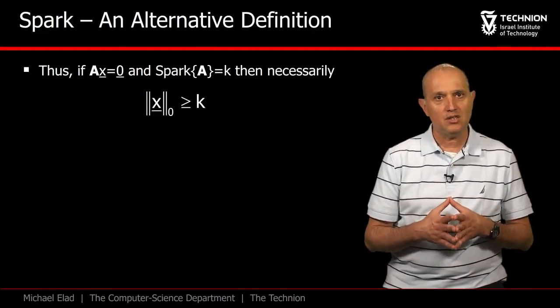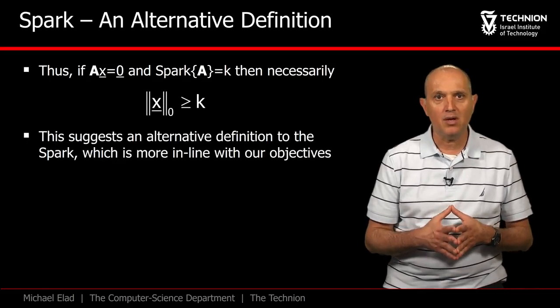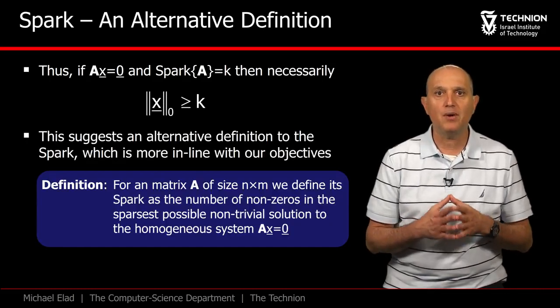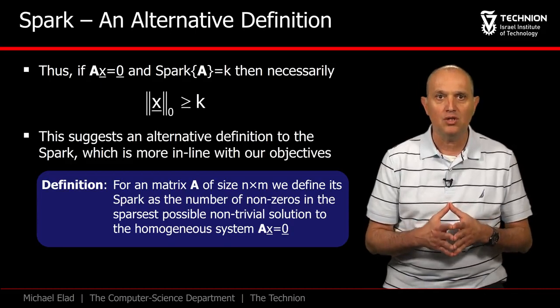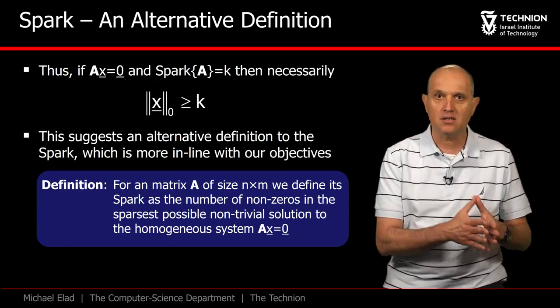Indeed, this suggests an alternative definition for the spark, as the number of non-zeros in the sparsest possible non-trivial solution to the homogeneous system A x equals 0.